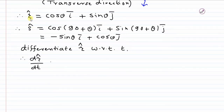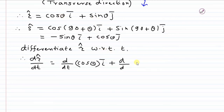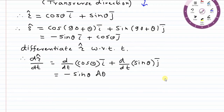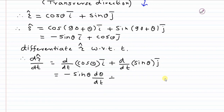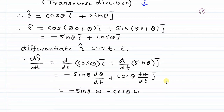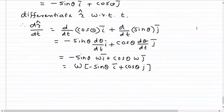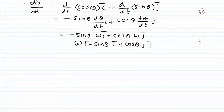Now we differentiate r-cap with respect to t. Taking the derivatives: the derivative of cos theta gives minus sin theta times d theta by dt, which is omega, and the derivative of sin theta gives cos theta times d theta by dt times j. Taking omega common, we get omega times minus sin theta i plus cos theta j. But this value is nothing but s-cap, so we can say that d r-cap by dt is nothing but omega times s-cap.